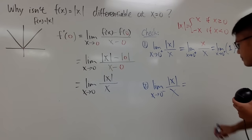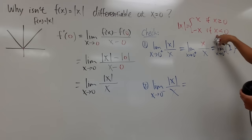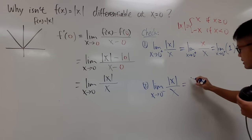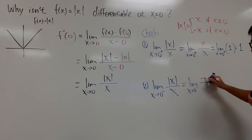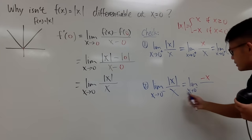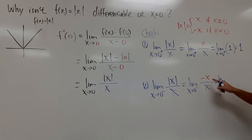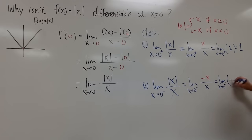Secondly, when x is approaching 0 minus, that means x is negative. So we replace absolute value of x with negative x. This gives the limit as x approaches 0 minus of negative x over x. We reduce this first and get negative 1. And when you take the limit of negative 1 as x approaches whatever, you get negative 1.